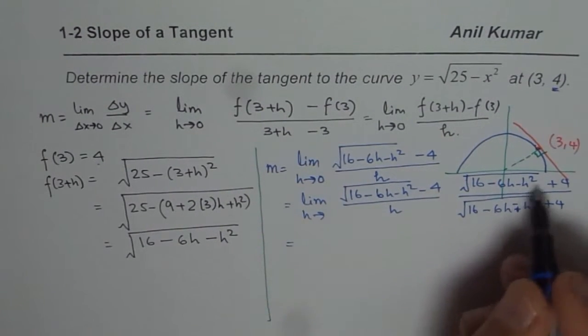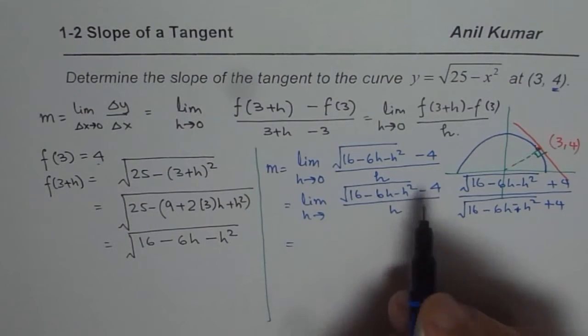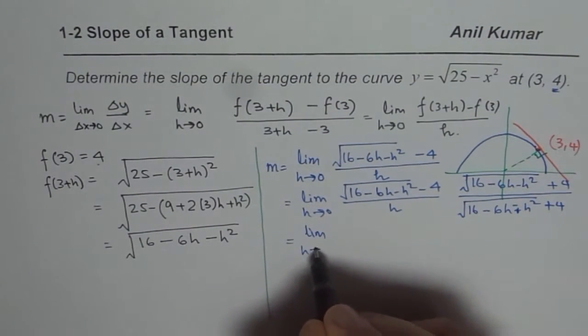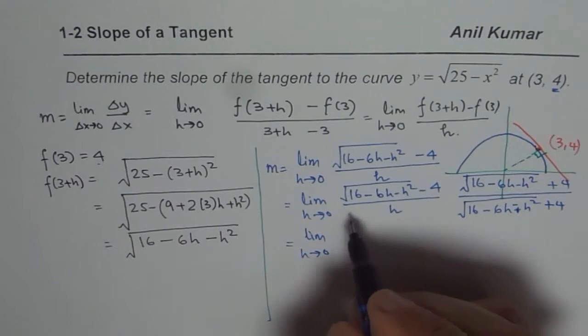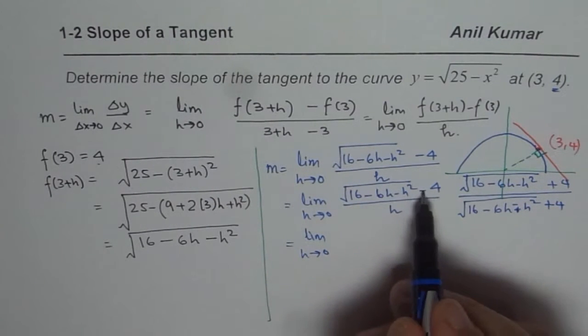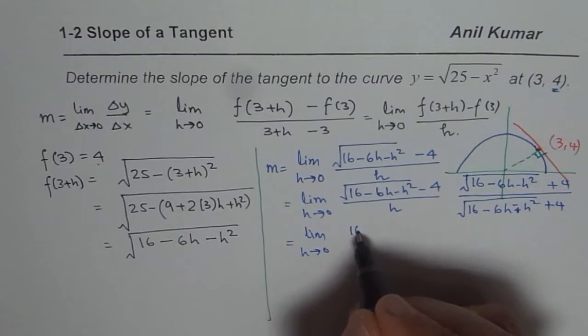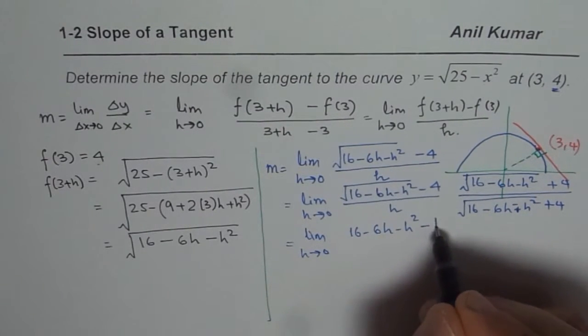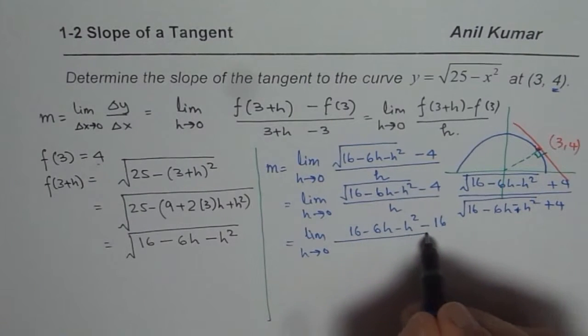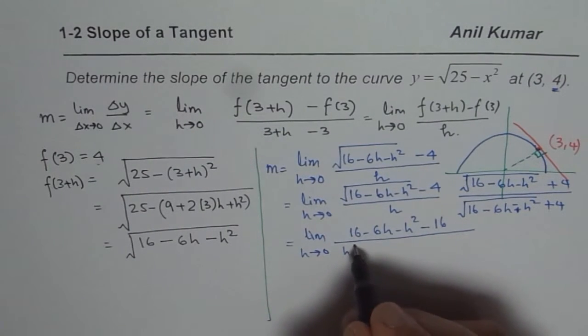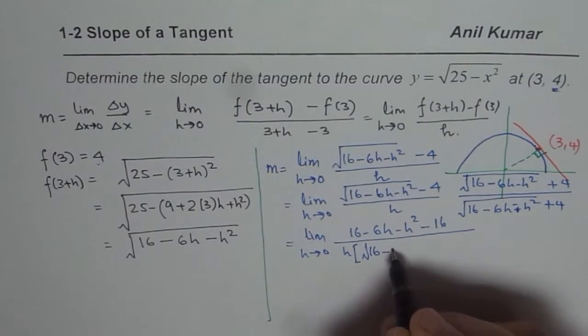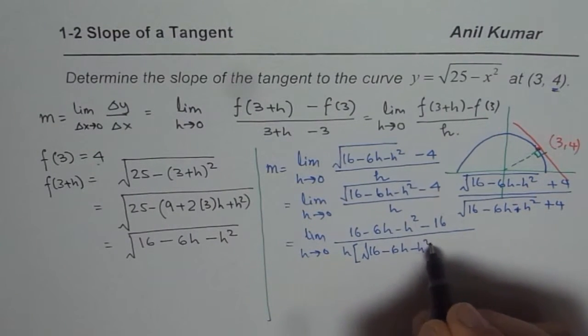So once you multiply with this conjugate, we get difference of squares here. So limit h approaches 0. And the numerator becomes this square minus that square, which is 16 minus 6h minus h square minus 16. And the denominator, we have product of these two things. So we have h times square root of 16 minus 6h minus h square plus 4.